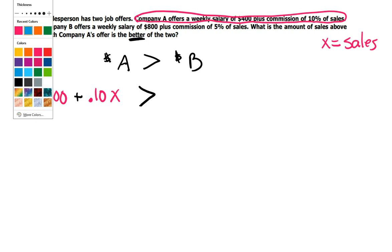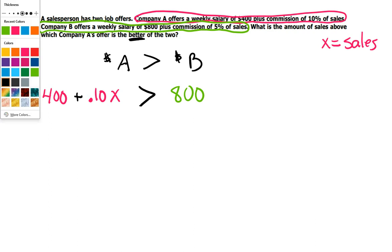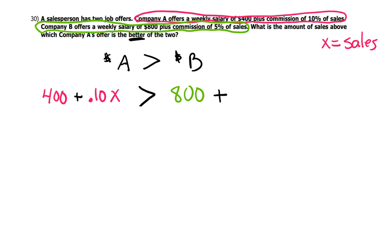Company B offers a weekly salary of $800, but they'll only give you 5% of your sales. So it's $800 plus 5%. That'd be .05, and sales still X.